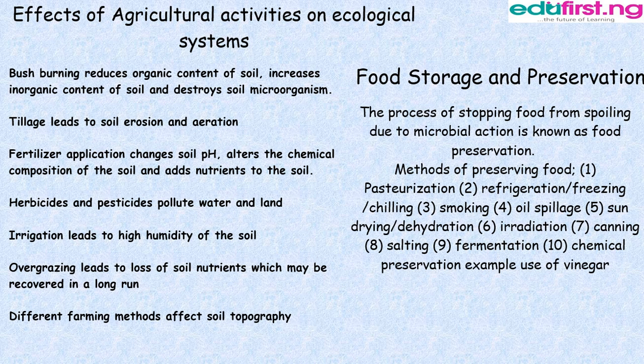Effects of agricultural activities on ecological systems. Bush burning reduces organic content of soil, increases inorganic content of soil, and destroys soil microorganisms. Tillage leads to soil erosion and aeration. Fertilizer application changes soil pH, alters the chemical composition of the soil, and adds nutrients to the soil. Herbicides and pesticides pollute water and land. Irrigation leads to high humidity of the soil. Overgrazing leads to loss of soil nutrients. Different farming methods affect soil topography.